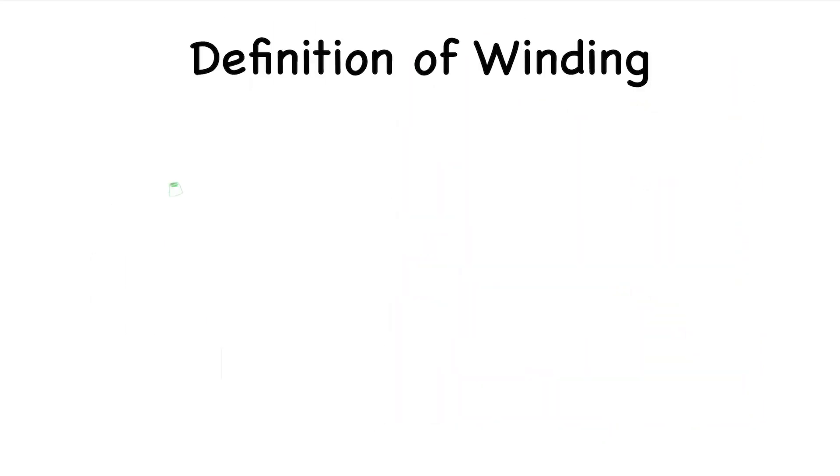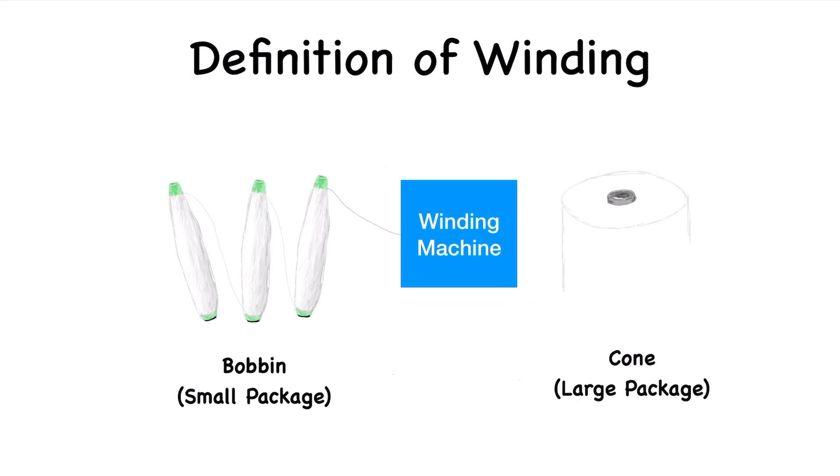Winding is the process of transferring yarn from small packages like hanks, bobbins, spindles, etc. to a large package such as cones, perns, cheese, etc. to make a package containing a considerable amount of yarn.